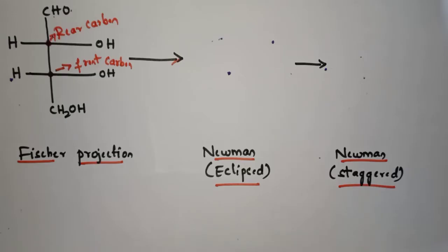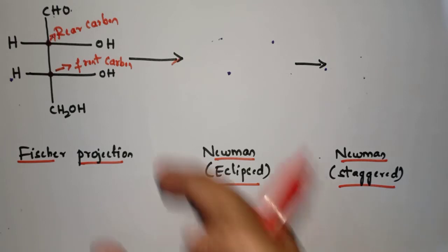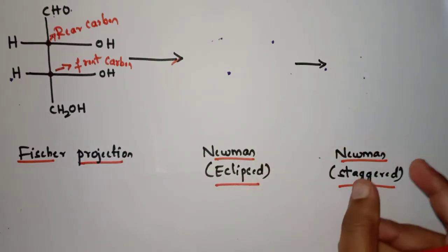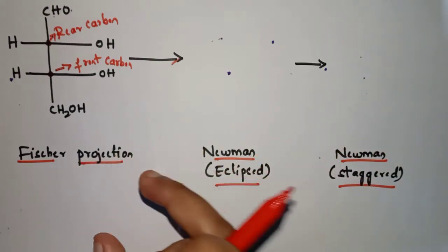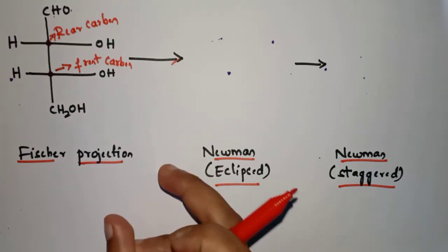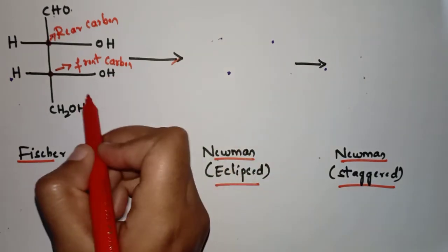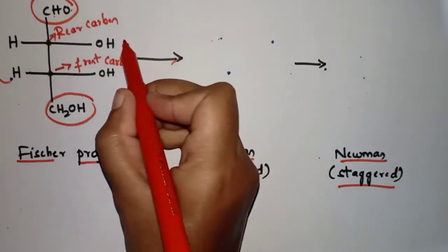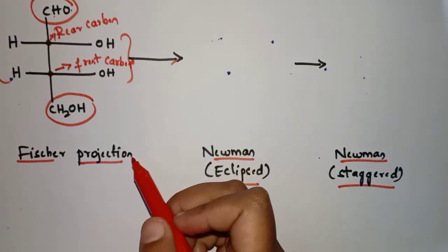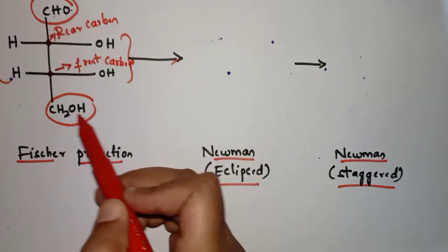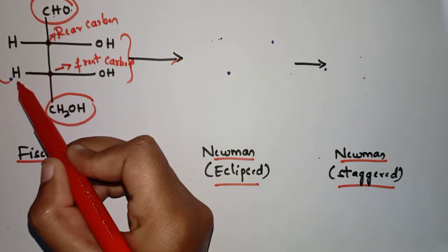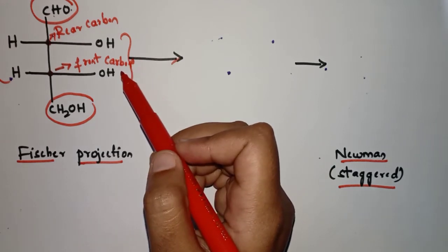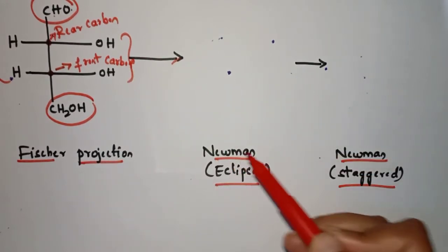Now let's see another example. This is another Fisher projection we have to convert into Newman eclipsed first, then into Newman staggered — because Fisher projection is itself an eclipsed form. The pairs here are: CHO and CH2OH make one pair, the two hydrogens make one pair, and the two OH groups make another pair.